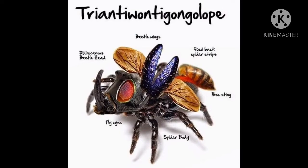So according to the description given by the poet, the insect looks something like this. The Tri-Anti-Wanty-Gonglop insect looks like this. It has very funny wings. It looks like a bee. It is something like a spider. It has fly eyes. It has red back spider spikes on it. And it is really very funny. Let's see what are the characteristics of this insect — how it behaves and how it lives.